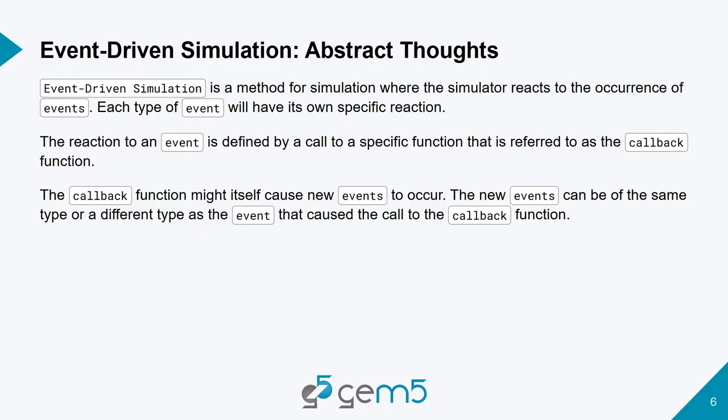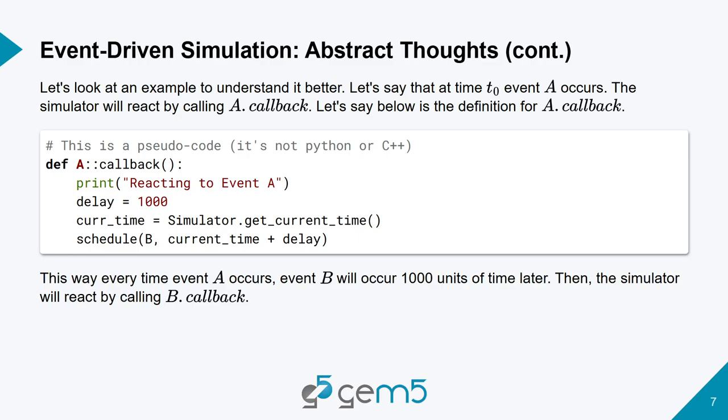The way I think about event-driven simulation is that the user makes something happen in the future, and then the simulation reacts to that thing occurring. For a user to have control, they specify a callback function — you're telling the simulator to call you back when it gets to a certain point. As pseudocode: if you have event A with a callback function, when the simulator reaches the time A is scheduled, it calls A.callback, which gets the current simulator time and schedules event B 10,000 time units into the future.